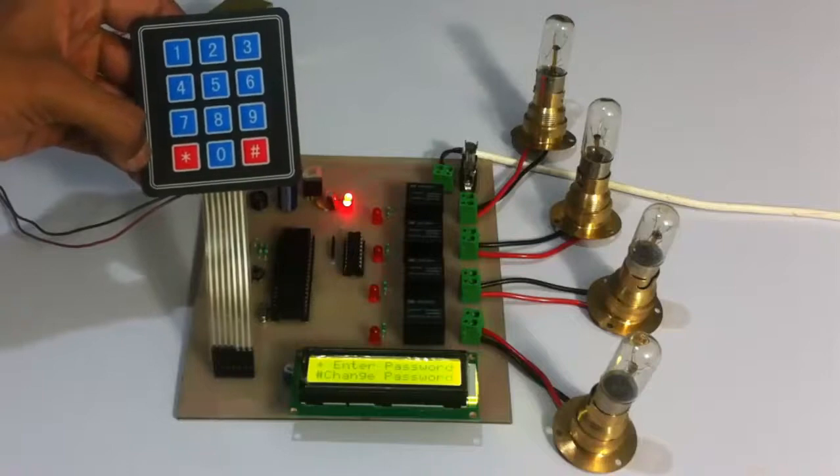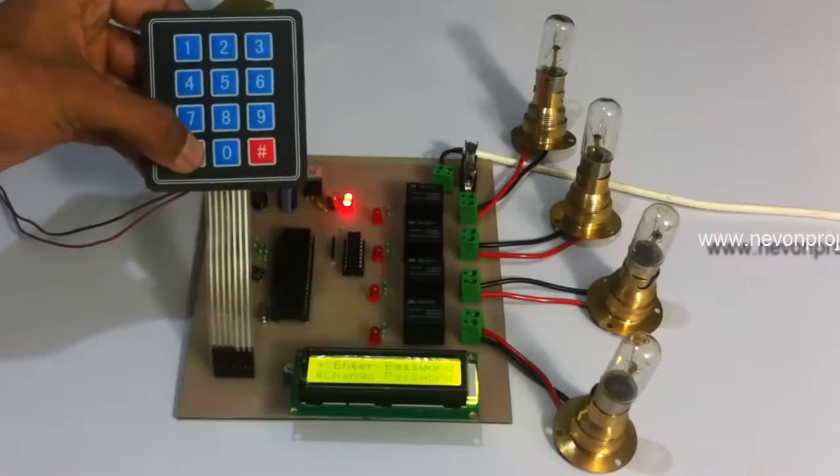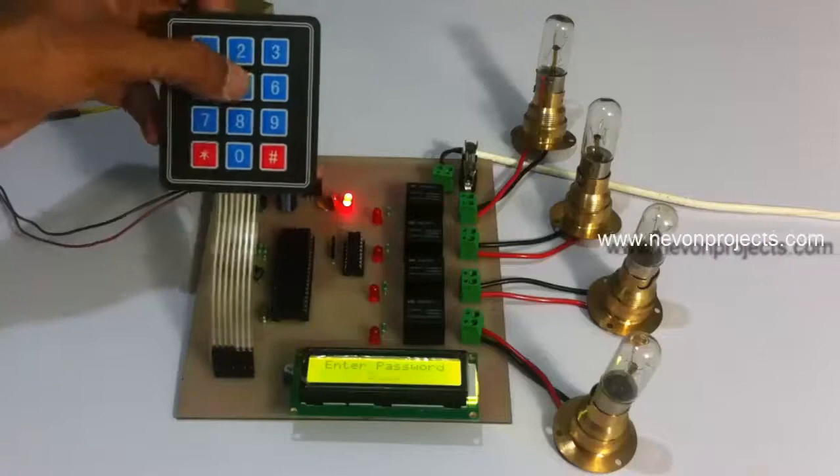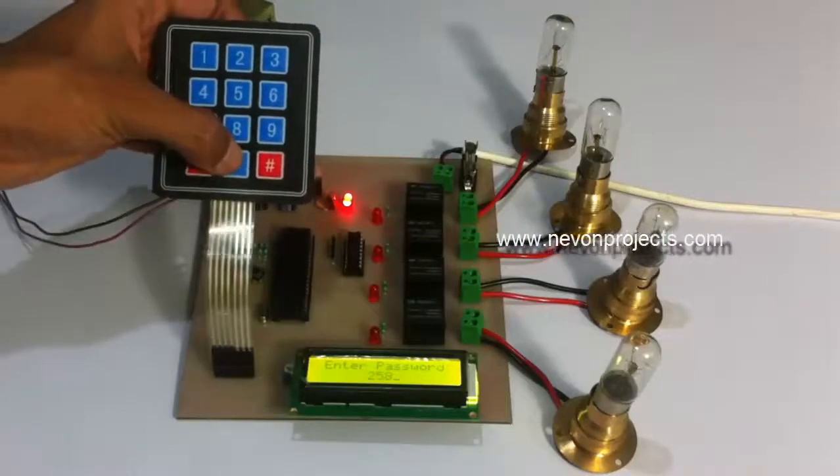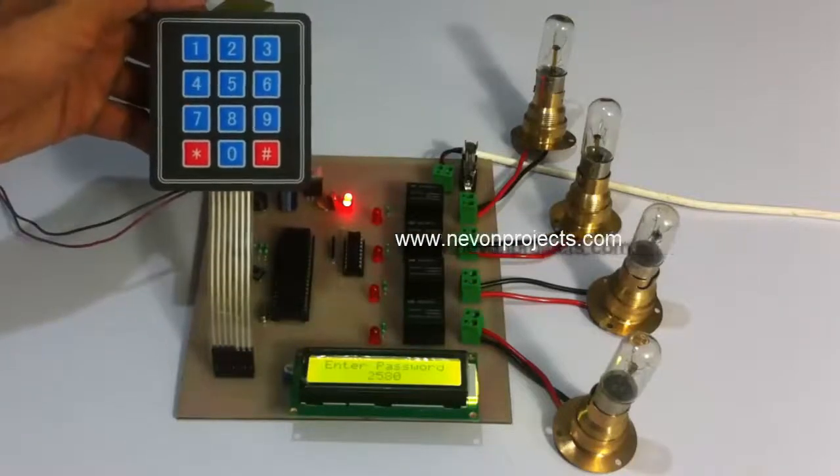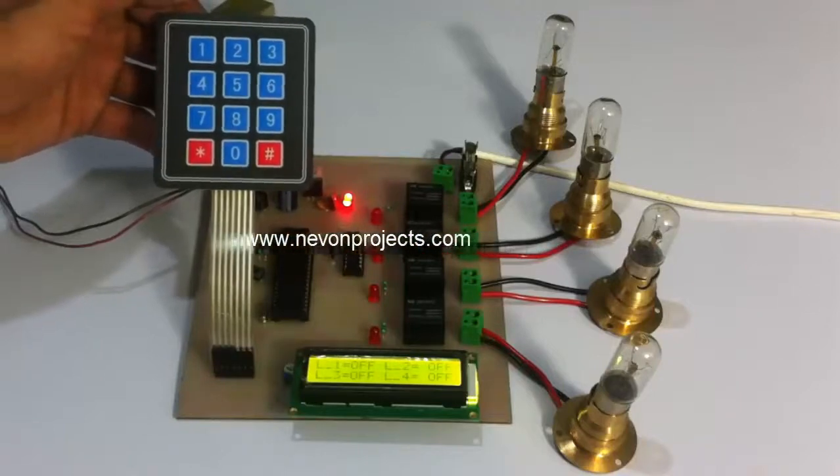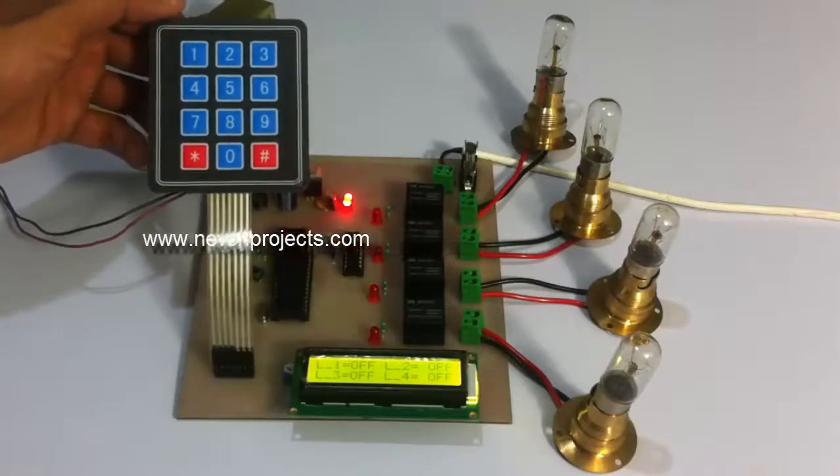Let's enter the right password now. So this is the right password: 2580. The password is accepted and it shows the status of various lines—that is, line 1 is off, line 2 is off, 3 and 4, all are off.